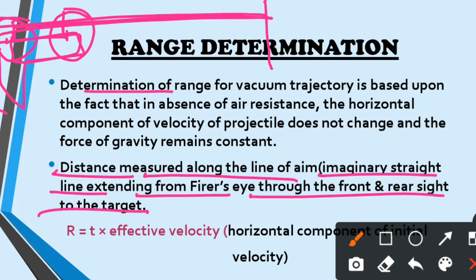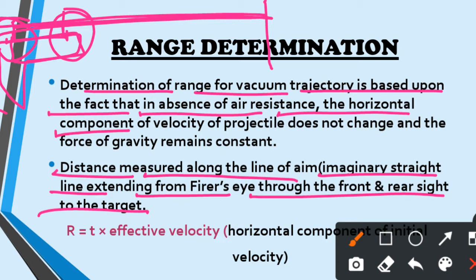Determination of range for vacuum trajectory is based upon the fact that in absence of air resistance, the horizontal component of the velocity of a projectile does not change and the force of gravity remains constant.